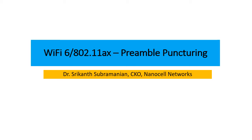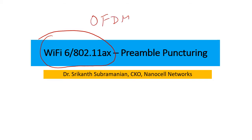I'd like to talk about a feature of Wi-Fi 6 which does not get mentioned very often. We talk about OFDMA and how it can help with high density scenarios, but there is also an interesting flexibility feature in the way we use OFDMA, which is called preamble puncturing. My name is Srikant and I am with Nanocell Networks.